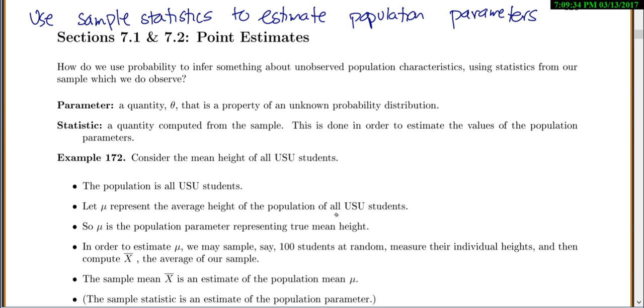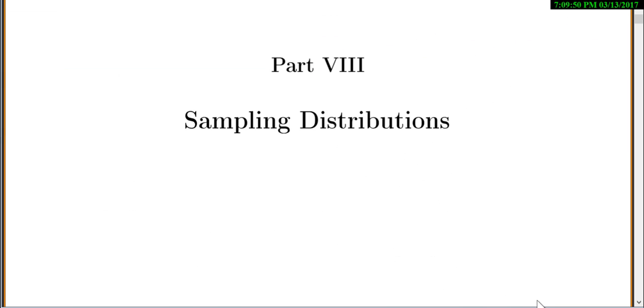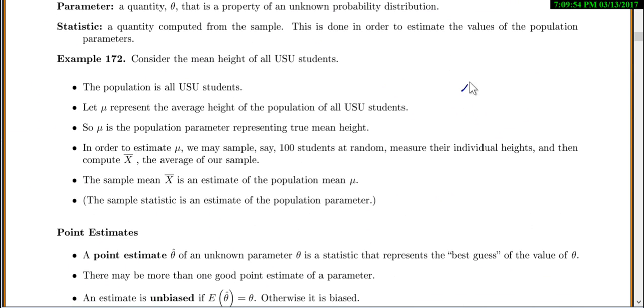Let's consider, we want to find the average height of all USU students. Your population would be all USU students. We're going to let mu represent the average height of all the USU students. So mu is our population average, our population mean.